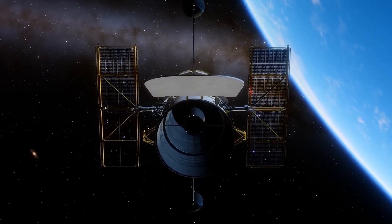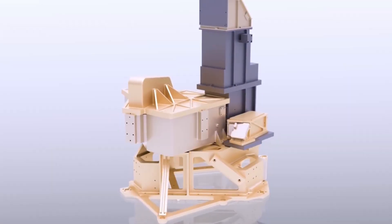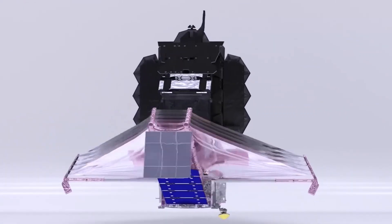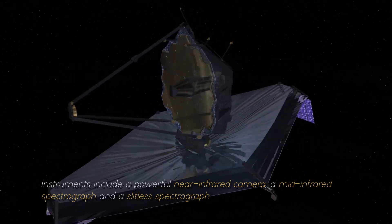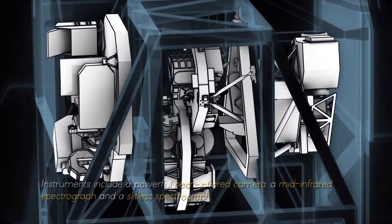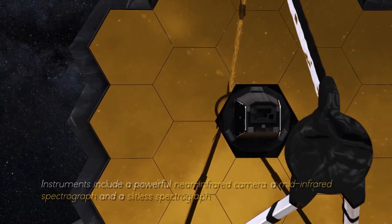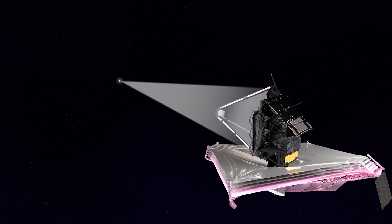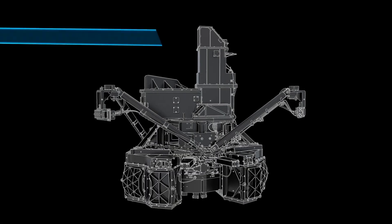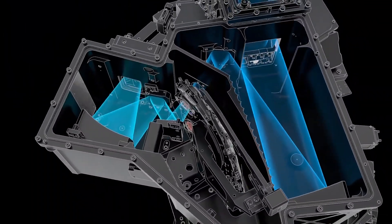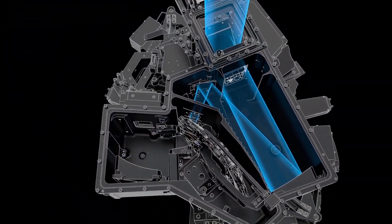This allows the JWST to collect and focus light from distant celestial objects with unmatched precision and sensitivity. Instruments include a powerful near-infrared camera, a mid-infrared spectrograph, and a slitless spectrograph. These instruments work together to capture images, measure spectra, and study the properties of objects ranging from the oldest galaxies to the planets of our solar system.